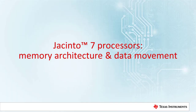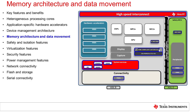Instrumental to the overall system performance of the Jacinto 7 processors are the memory architecture and the movement of data across the SoC. It is important to keep data flowing to all the various cores so that the majority of their time is spent processing and not stalling. In this section, I will describe the overall memory system on the SoC and the various components which deal with data movement and event or message management.